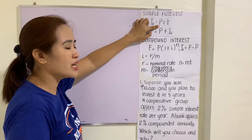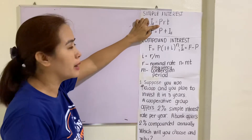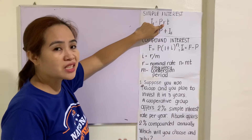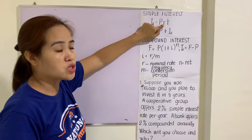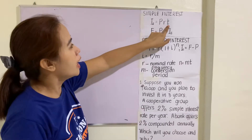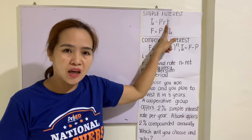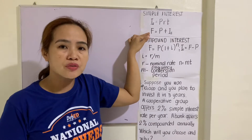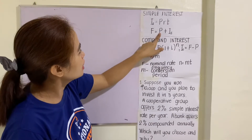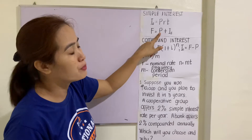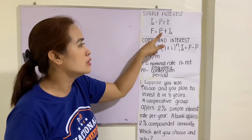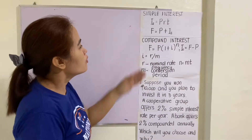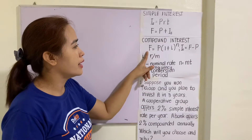P is the present value or the principal amount. R is the rate of interest, expressed in percent to be changed to decimal. T is the time expressed in years. F is the maturity value or future value, equal to P plus the simple interest.